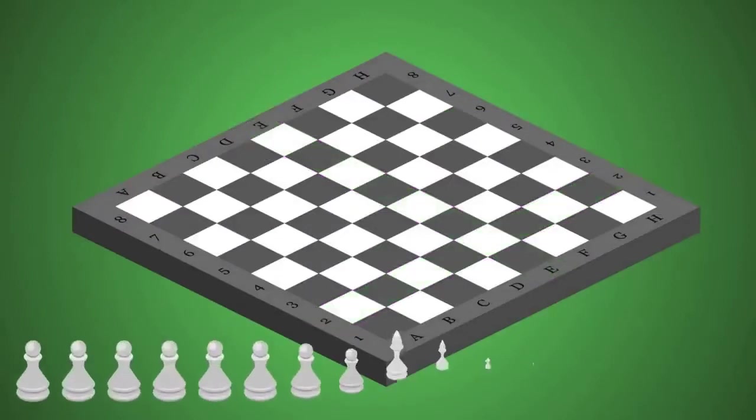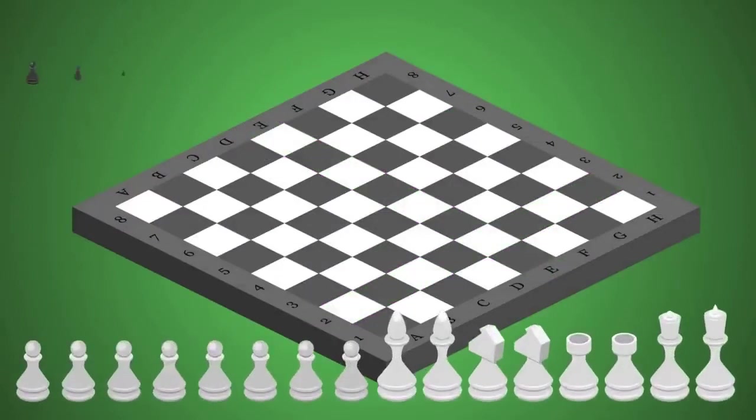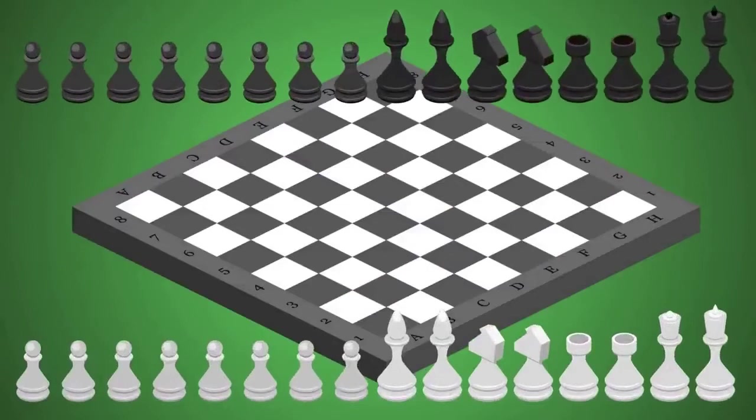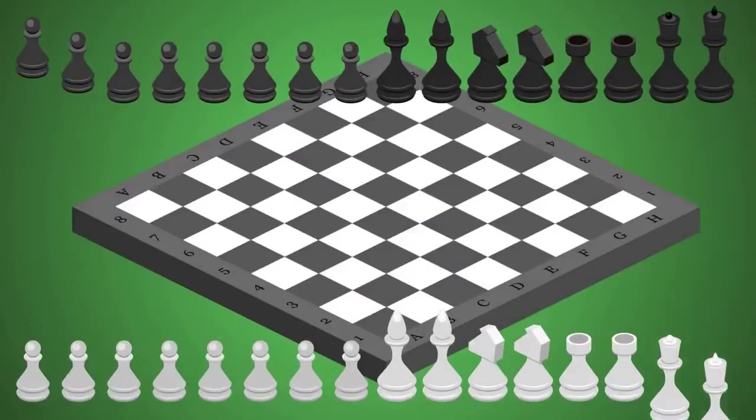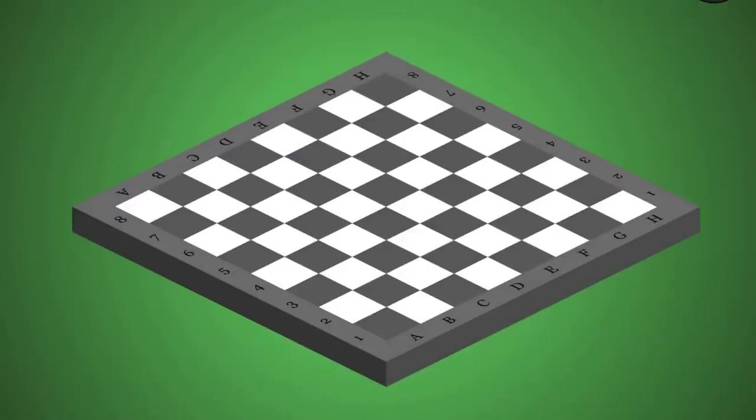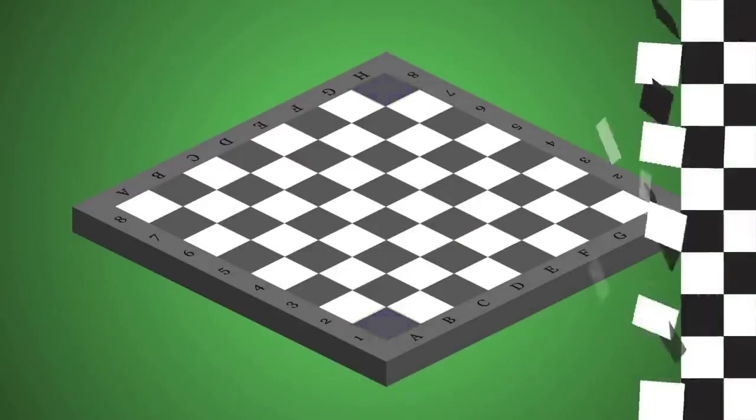The player with the white pieces goes first. Each chess piece has a name and specific move capabilities. Don't forget to position the board correctly before playing. Each player should have a dark square in their lower left corner.